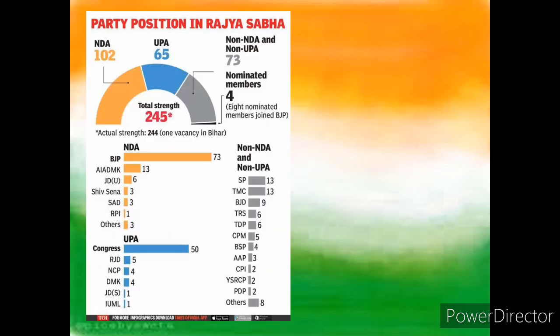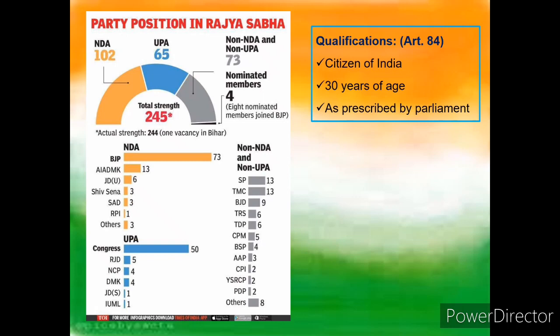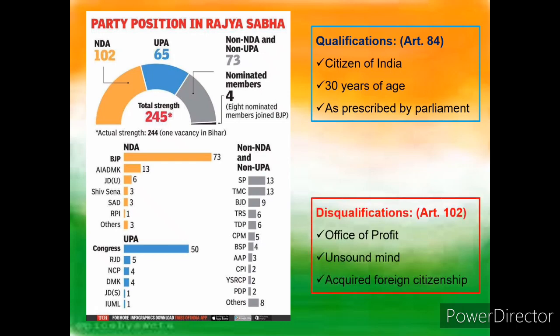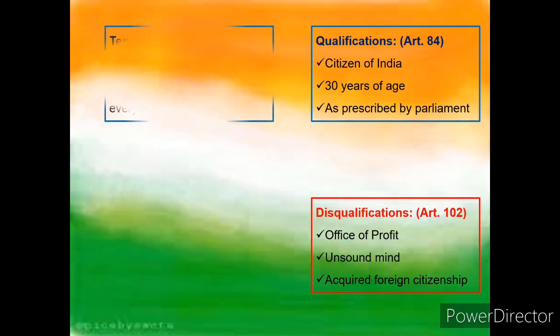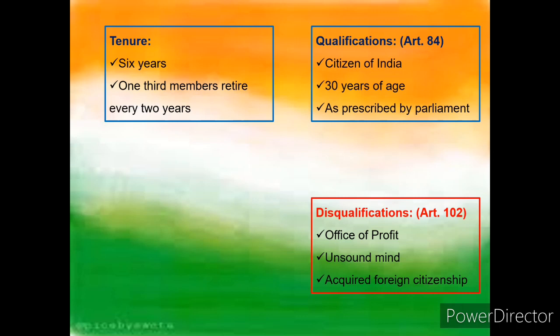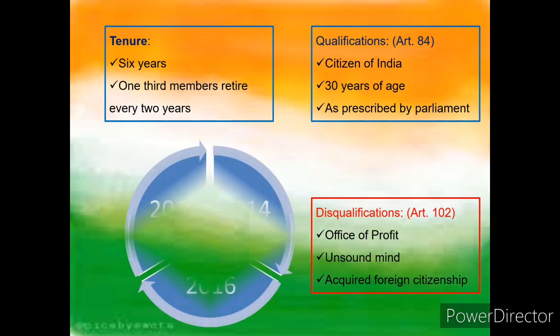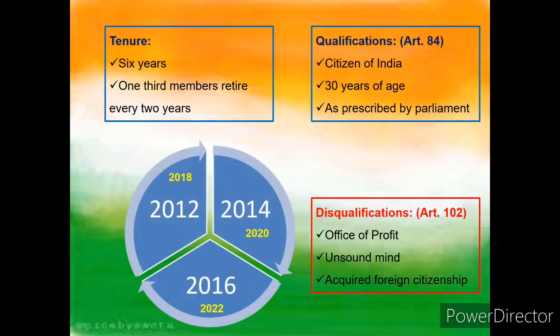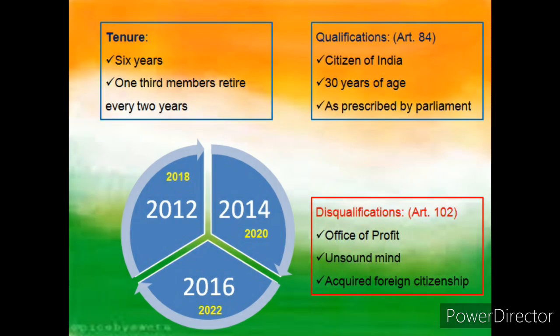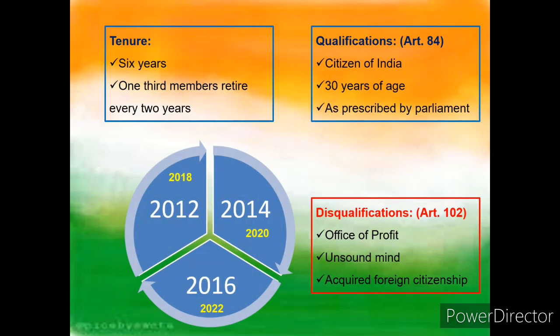The qualifications required to be a member of the Rajya Sabha are: a person should be a citizen of India, should be 30 years of age, and must possess qualifications as prescribed by the parliament. However, a person can be disqualified if they hold an office of profit, are of unsound mind, or have acquired foreign citizenship. Rajya Sabha members enjoy a six-year term, but only one-third of members retire every two years. So an MP elected in 2014 completes his term in 2020, while two-thirds remain as members providing continuity — and therefore it is known as the permanent house of parliament.